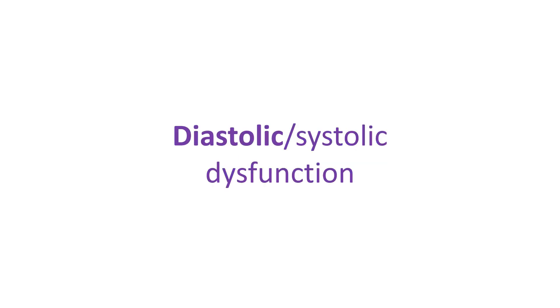Cardiac amyloidosis due to AL amyloidosis can manifest as heart failure with either diastolic dysfunction or systolic dysfunction, of which diastolic dysfunction is more common. Cardiac arrhythmias are another important manifestation of cardiac amyloidosis.